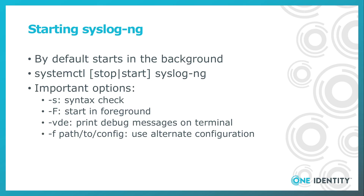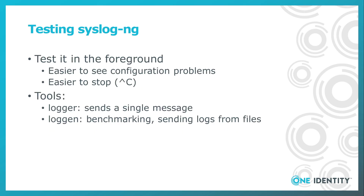'-f path-to-configuration' allows you to use an alternate configuration instead of the default. You will often test new syslog-ng configurations in the foreground — this way you can find configuration problems faster and easier. You can also easily stop syslog-ng using Ctrl+C.